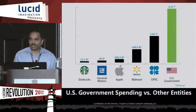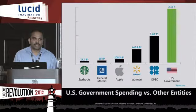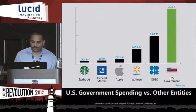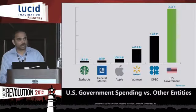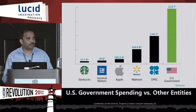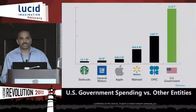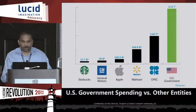Just to look at the numbers we are dealing with: the US government spends about 2.1 trillion dollars per year. Compare that with the revenue of some of the largest corporations — though of course those are revenues, whereas the number for the US government is spending. We collect this data across different departments and agencies and provide different statistics on that data.